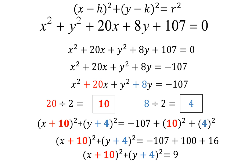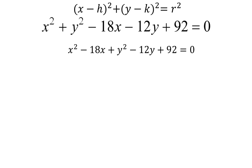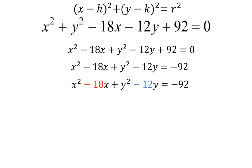Last example — pause the video and try to do it yourself. You might be able to do it in fewer steps, but I'm still going to show every single step. First step: get all my x's together and all my y's together. I have x squared minus 18x plus y squared minus 12y, and 92 goes to the other side — it's a positive 92, so I subtract 92. The number in front of x is negative 18, and the number in front of y is negative 12.